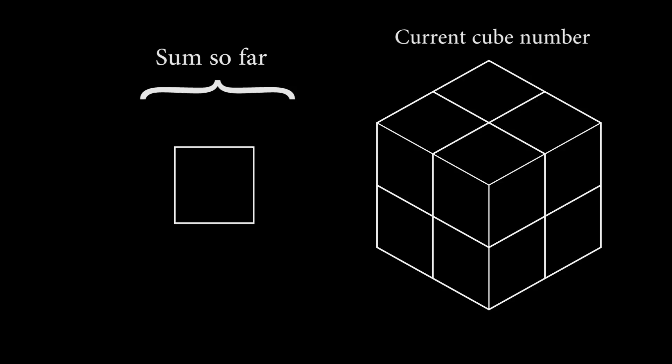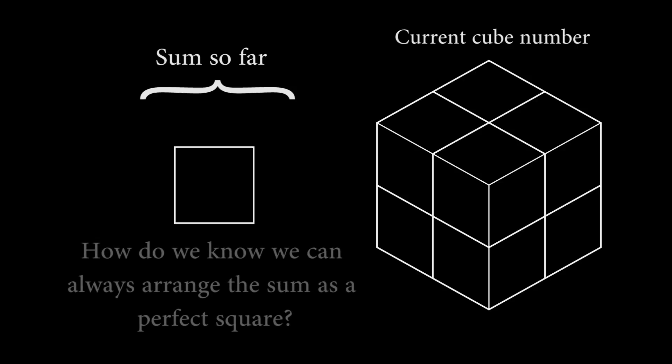Now, a reasonable question to ask is, how do you know we will always be able to arrange the partial sum as a perfect square? And this is a good question that will be answered soon. But for now, let's just try it and hope it works.